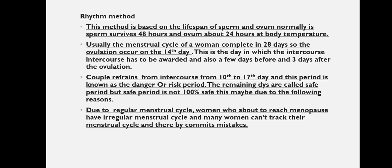Intercourse has to be avoided on the day of ovulation and a few days prior and 3 days after ovulation. The risky period is from day 10 to day 17, during which the couple has to avoid intercourse. This is also known as the danger or risk period. The remaining days are called the safe period, but it is not 100% safe as there may still be some chances of getting pregnant.